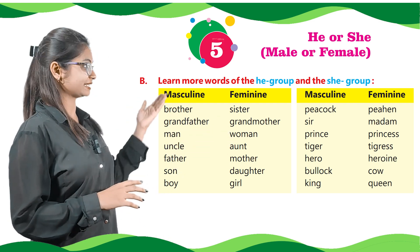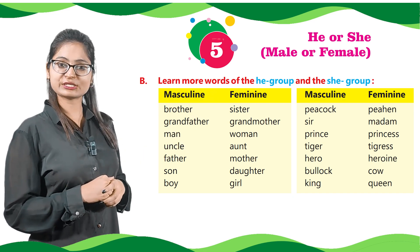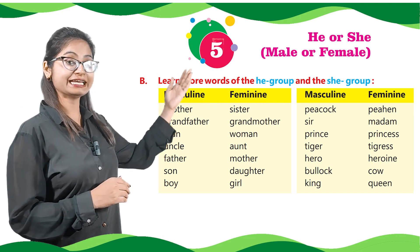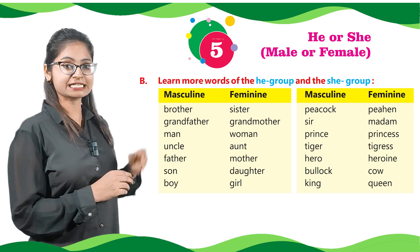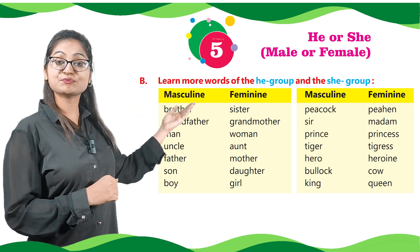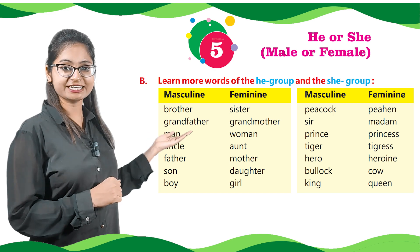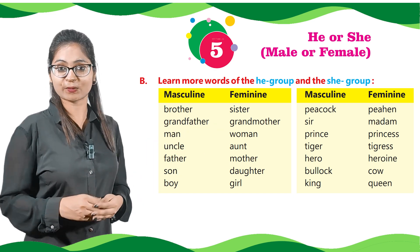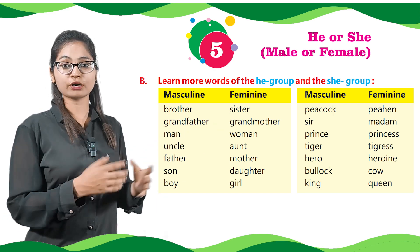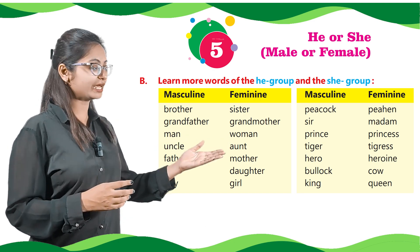In the next box we have masculine and feminine pairs. Let's read: peacock — peahen, sir — madam, prince — princess, tiger — tigress, hero — heroine, bullock — cow, king — queen.